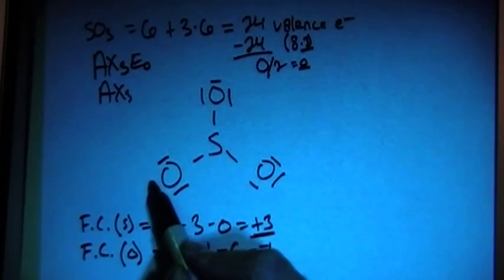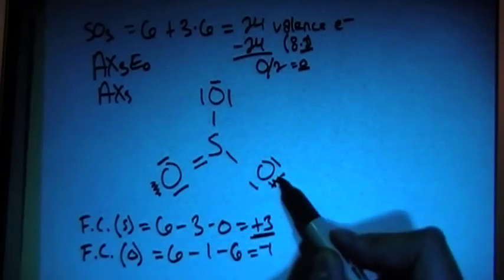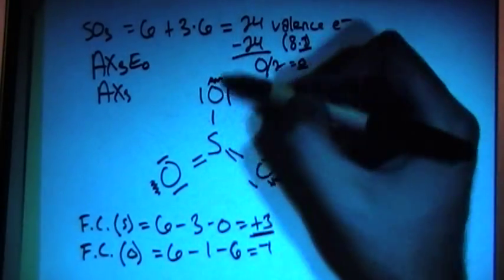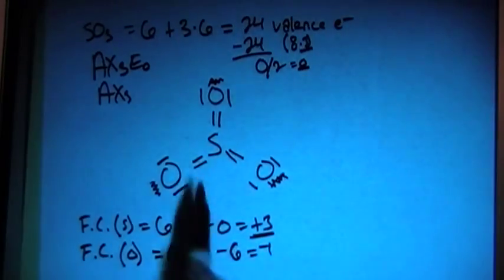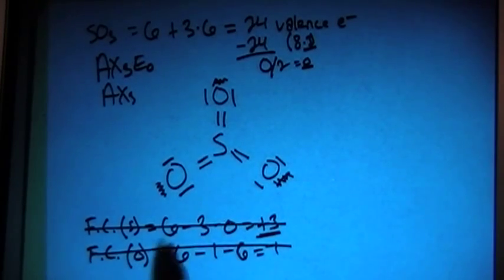So what we're going to end up doing: move these 2 electrons, make this a double bond, move these 2 electrons, make this a double bond, and move these 2 electrons, and make this a double bond. So now, let's check the formal charges to see how this structure works out.